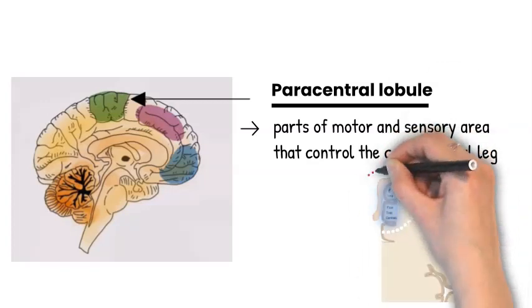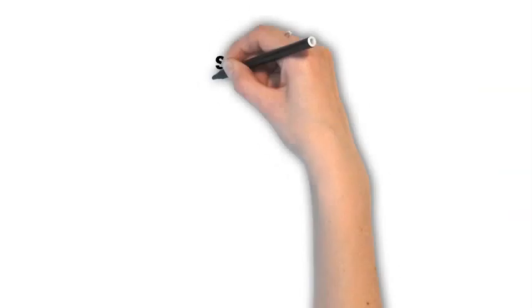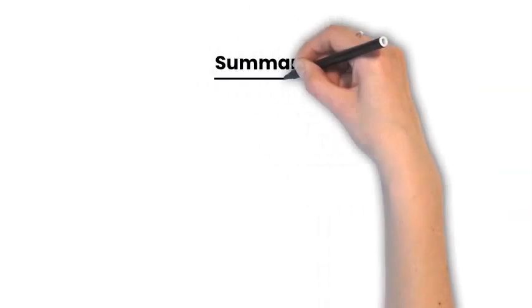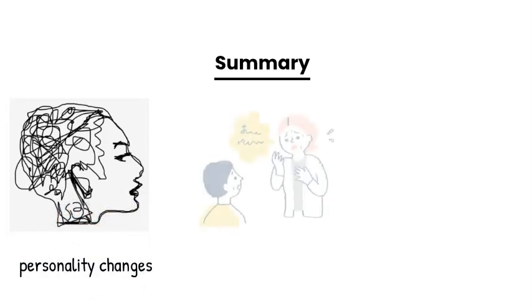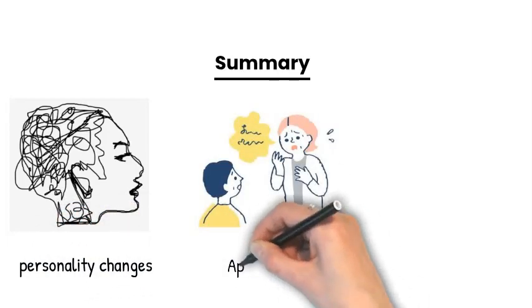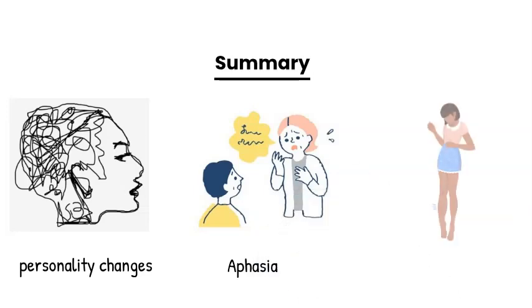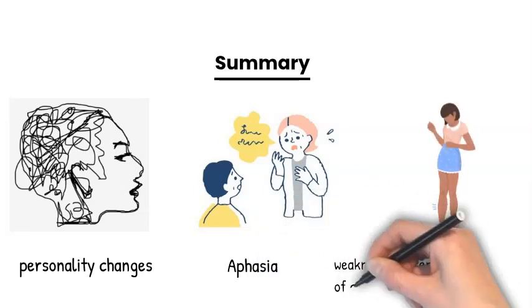As a summary, anterior cerebral artery stroke will cause personality changes, aphasia, weakness and sensory loss of the contralateral leg, plus incontinence.